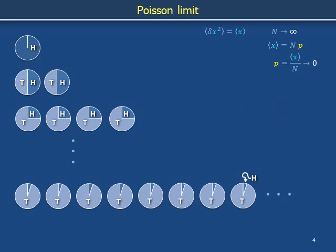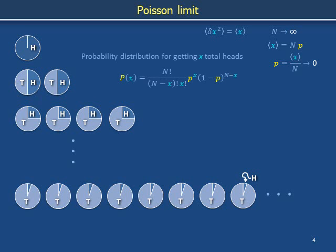This — variance equals the mean — is one of the signatures of the Poisson limit. To describe the Poisson limit in greater detail, we will now derive its probability distribution. Because under the hood we are considering a series of repeated coin tosses, we begin by writing down the exact expression for the binomial distribution.